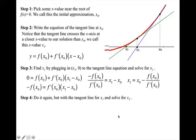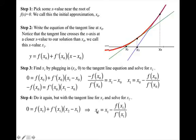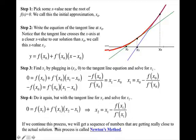And then you're going to do it again. So you get x₂. So if I was to do it for this one, I would get that x₂ = x₁ - f(x₁)/f'(x₁). If we continue this process, we will get a sequence of numbers that are getting really close to the actual solution, and this process is called Newton's method.